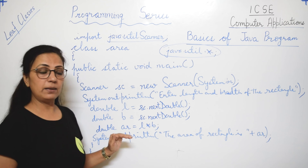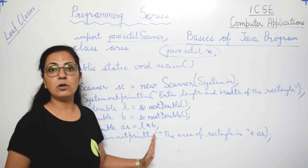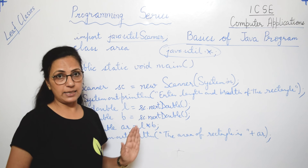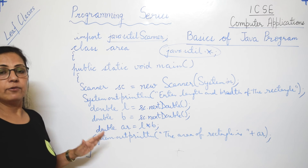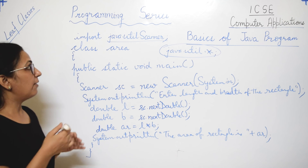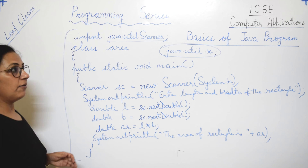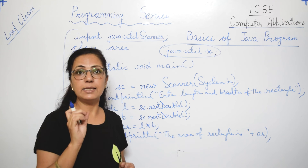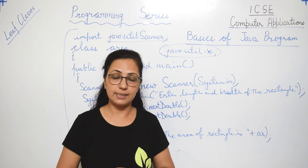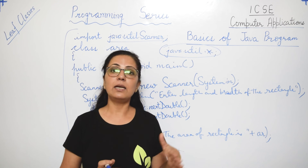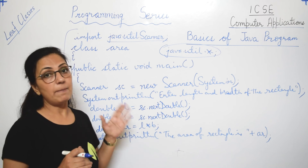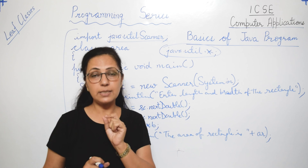If you want to also display length and breadth, you can add more print statements: System.out.println("The length of the rectangle is " + l) and System.out.println("The breadth is " + b). After completing the program, go to the BlueJ window and click the compile button. If there are any syntax errors, they appear at the bottom of the screen. Correct the error, compile again, and once it says no syntax error, close the program.